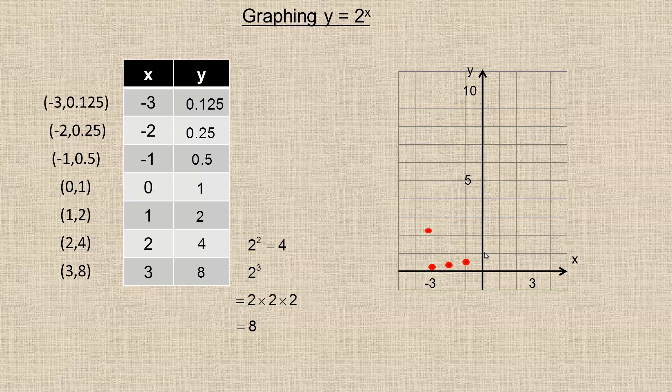And then 1, 2, so 1, 2 would be here, over 1, up 2. And then 2, 4, so right 2, up 4, so we'll put a dot right there. And then 3, 8, so over from the origin 3 and up to 8, the last dot is going to be right there.